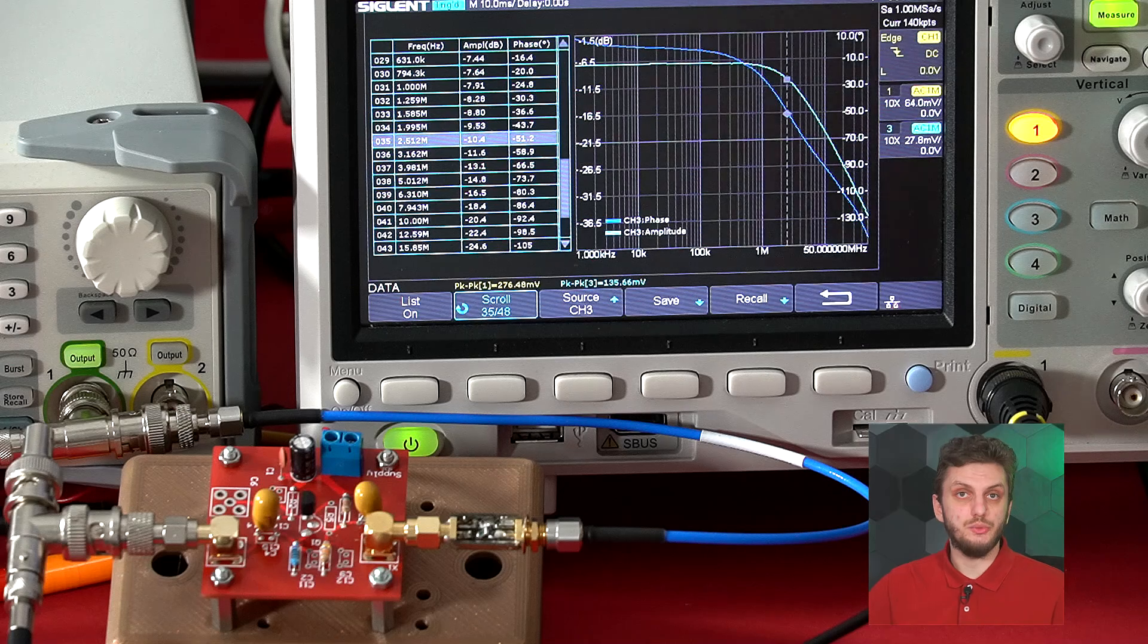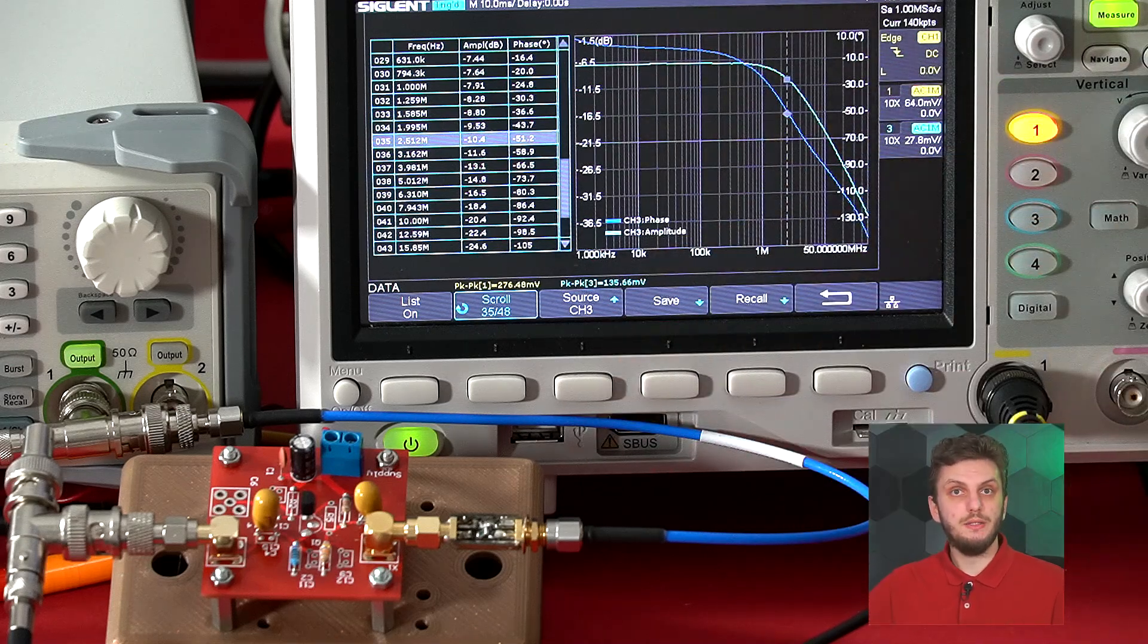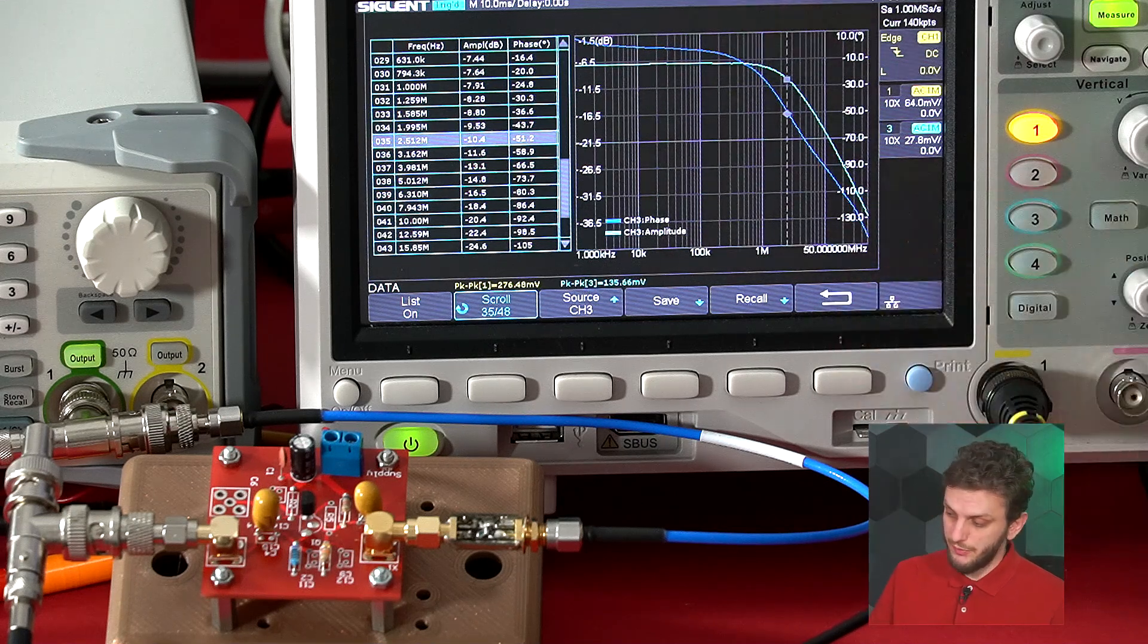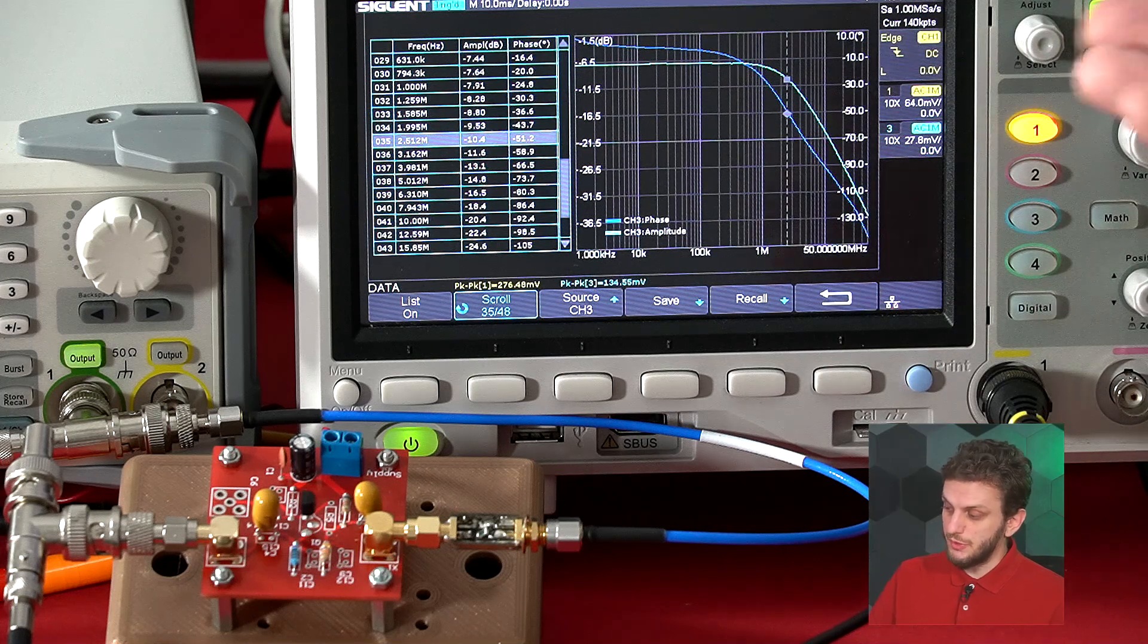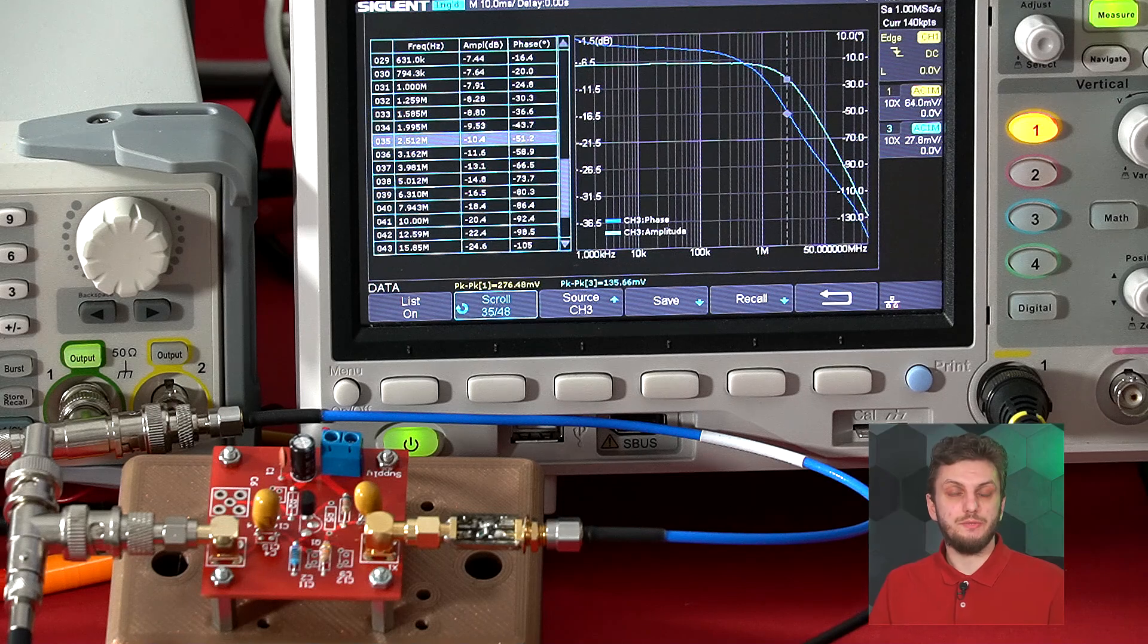After this, the gain starts to drop off because of the increasing input current and the decreasing input impedance. The amplifier is still providing power gain even after this point, however, this attenuation may or may not be acceptable based on your specific use case.